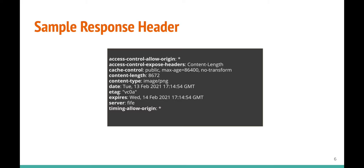Here is a sample response header for an image. Whenever a client makes a request to the web server for an image, this is what the server returns. We can see headers including Access-Control-Origin, Expose-Header, Content-Type indicating it's an image, and a Date header showing when the resource was requested. It also has an Expires header so the resource is set to expire at some future date. If we could read the Date header, we'd know when the resource was requested by the client.